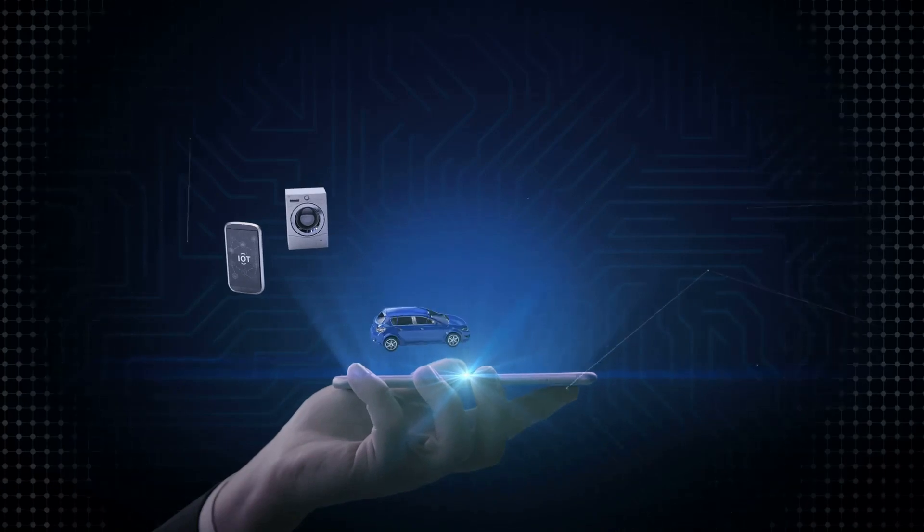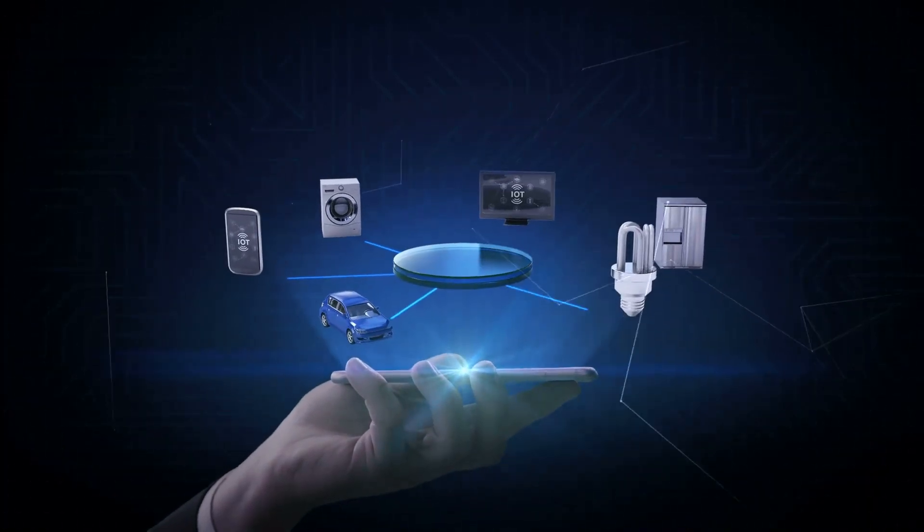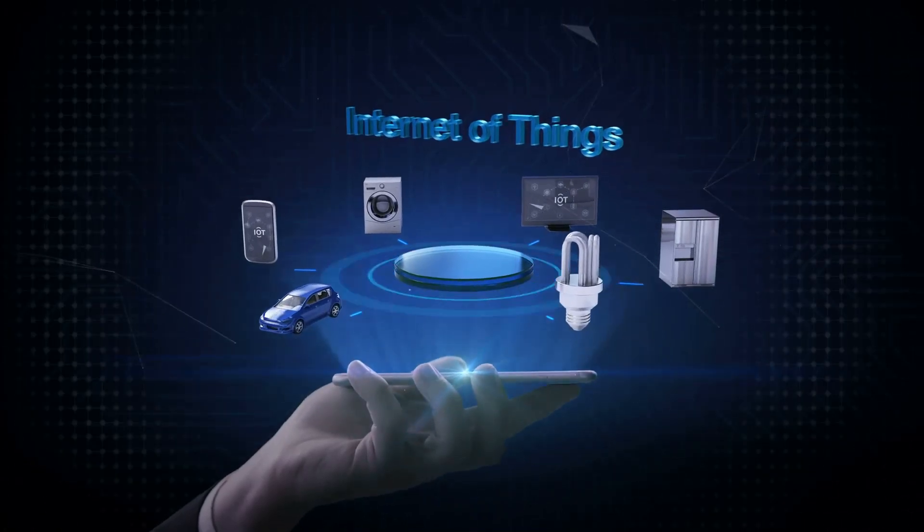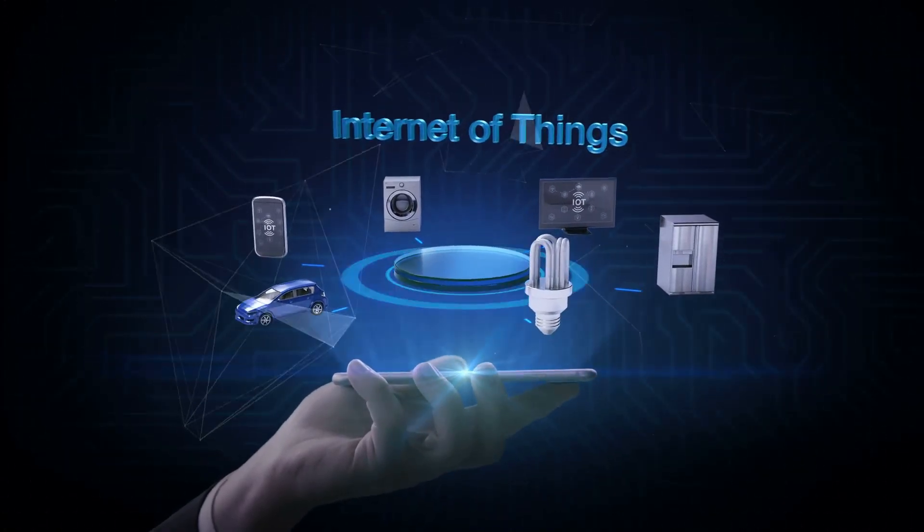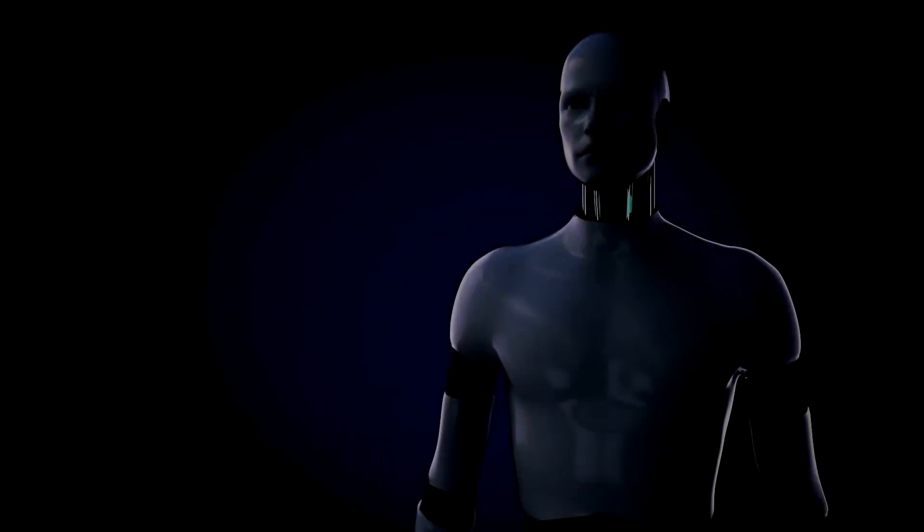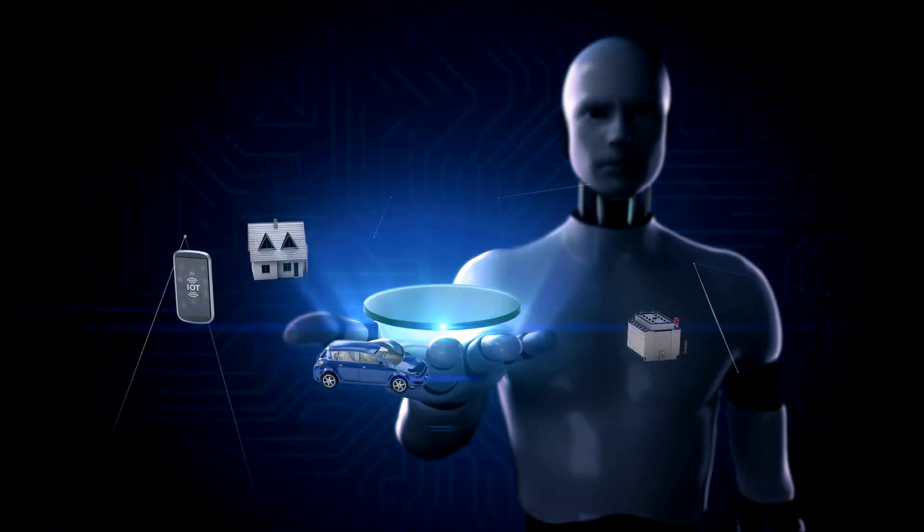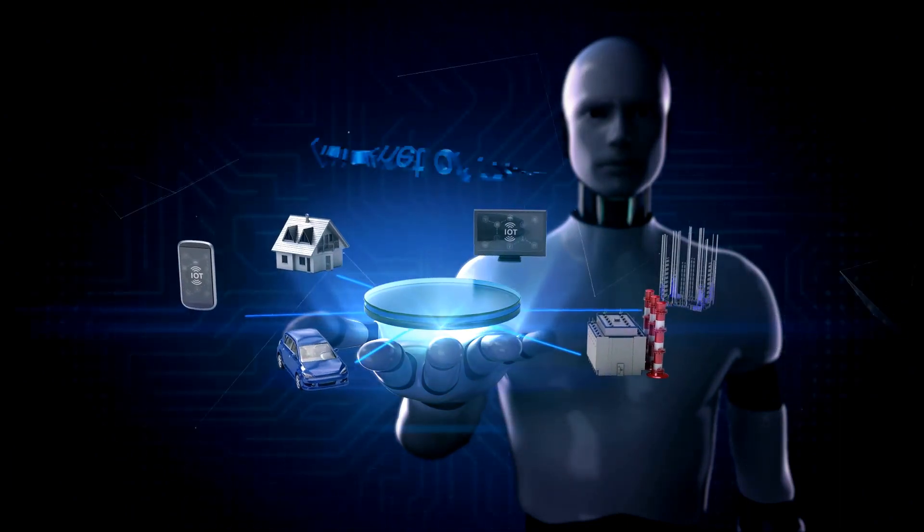Finally, there's 3D printing, also known as additive manufacturing. This technology builds objects layer by layer from a digital 3D model. It's revolutionizing manufacturing by allowing for on-demand, customized production. You no longer need a massive factory to create a unique product. And these are just a few examples.